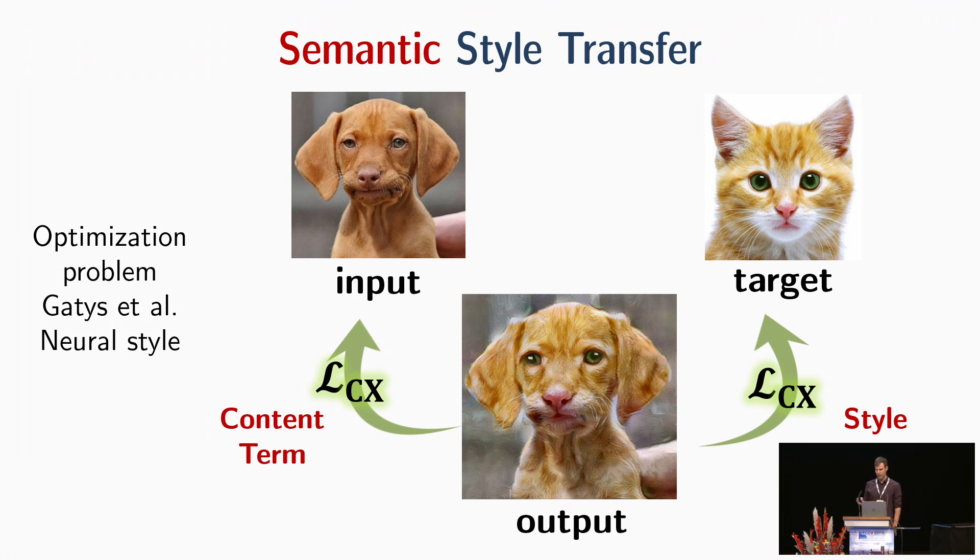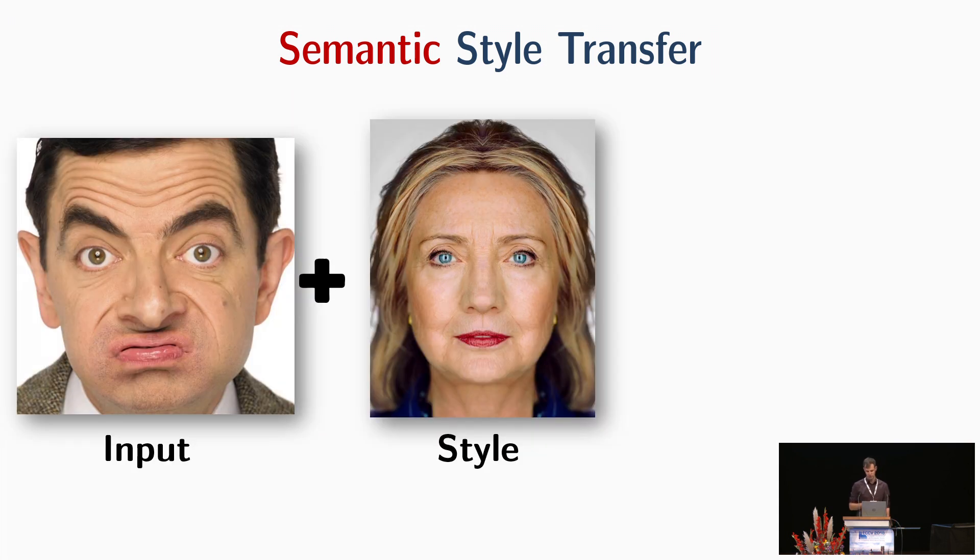Let me start from the first application. We call it semantic style transfer. We adopt the well-known optimization problem of Gatys et al. neural style and replaced both loss terms, the content term and the style term with our loss function. Let me show you some results. Here we have Mr. Bean as the input or content and Hillary Clinton as style and we get something like that.